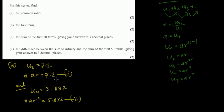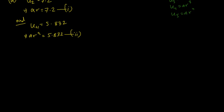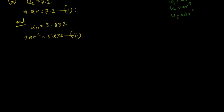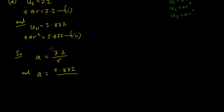We solve the simultaneous equations by elimination. From equation 1, a = 7.2 / r. From equation 2, a = 5.832 / r cubed. Since both expressions equal a, we can write 7.2 / r = 5.832 / r cubed.